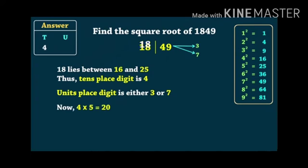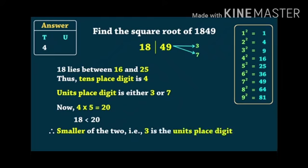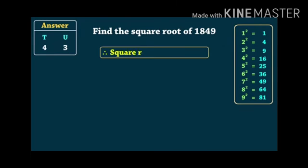Now, we will multiply the tens place with its successor: 4 times 5 is 20. But 20 is greater than 18. In this case, we will take the smaller of the two. That is, 3 is the units place digit. So, the square root of 1849 is 43.